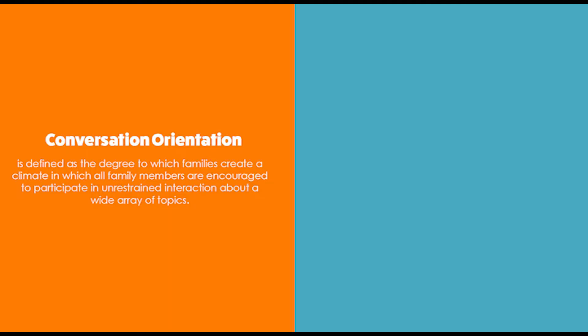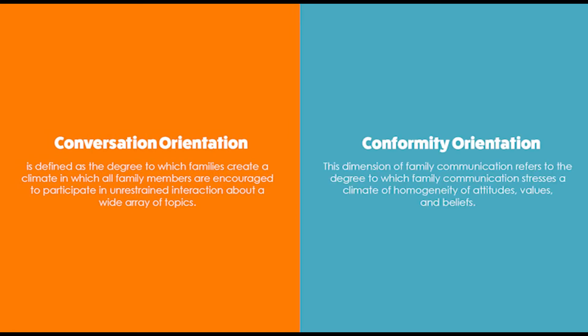The first dimension is Conversation Orientation. These families spend a lot of time interacting with each other, and family members share their activities, thoughts, and feelings. The second dimension of family communication is Conformity Orientation.